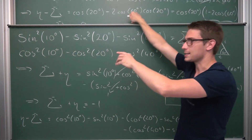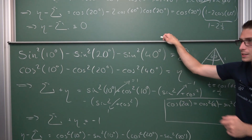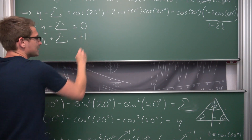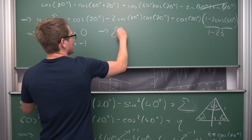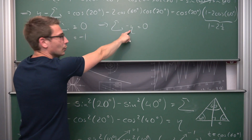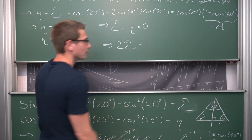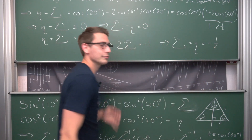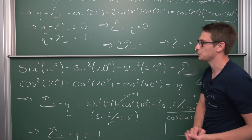So the addition of these sine squared terms is the same as the addition of the cosine squared terms. Our main goal was to find sigma. We now have two equations: sigma plus eta equals negative one, and sigma minus eta equals zero. Multiplying the second by negative one and adding both equations, the etas cancel and we get two sigma equals negative one, giving us sigma equals eta equals negative one half. And hence we are done.